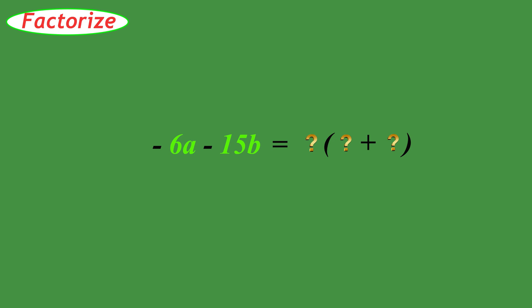Factorize negative 6A minus 15B. This example is similar to the last example except that it has two negative signs. The largest factor that goes in front of the parentheses is negative 3. So negative 3 times what equals negative 6A? It must be positive 2A. And negative 3 times what equals negative 15B? It must be positive 5B.